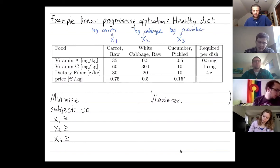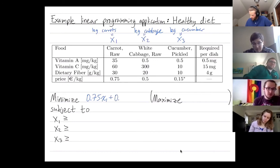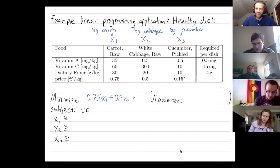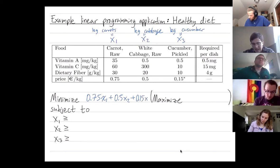We're trying to minimize cost. So how do I get the cost? Well I have to pay 0.75 pounds for every unit of carrots plus 0.5 pounds for every unit of cabbage. Pounds is not a unit of weight here. Pounds is our, or maybe these are euros. We have to pay 0.75 euros for every unit of carrots, 0.5 euros for every unit of cabbage, and 0.15 euros for every unit of cucumber. We're trying to minimize costs.